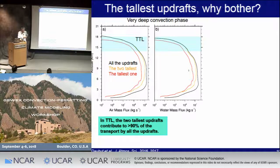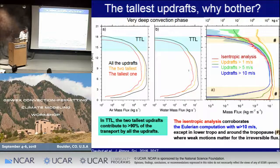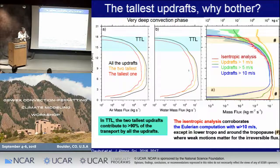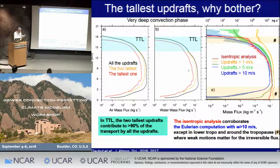We also corroborate this Eulerian analysis using the isentropic one, shown in red. In the free troposphere, the two tallest updrafts are the most important for vertical transport. But that is not the case in the lower troposphere and in the tropical tropopause layer, where there is no longer convergence between the two analyses — it's due to weaker motions that also contribute to the overall updraft flux.